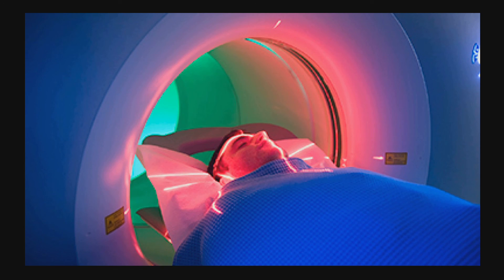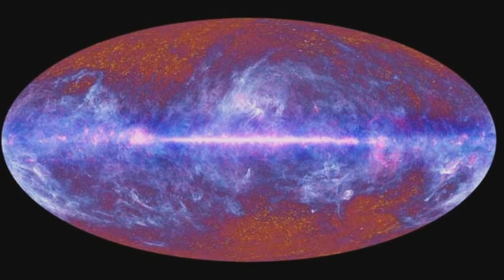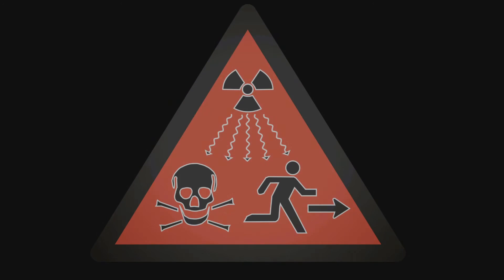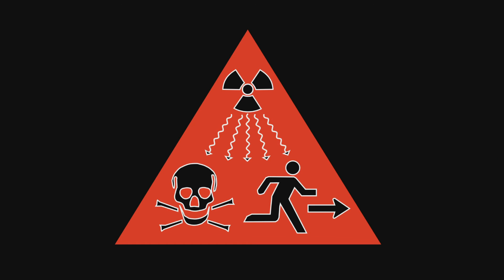X-rays are produced by firing electrons at a metal target, while gamma rays are emitted by the nucleus of a radioactive atom. Gamma rays are used to kill cancer cells and to sterilize medical equipment. They usually produce energy of about 100 kilo electron volts (keV). Gamma rays have the smallest wavelength but the highest energy.